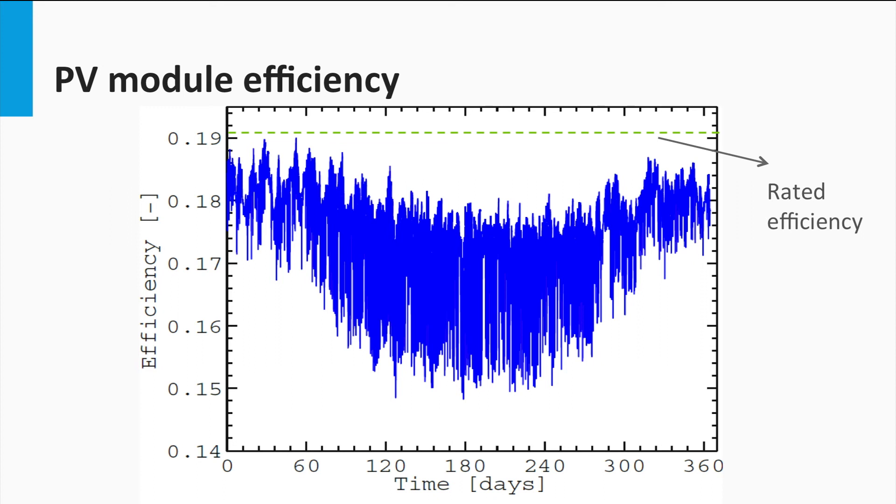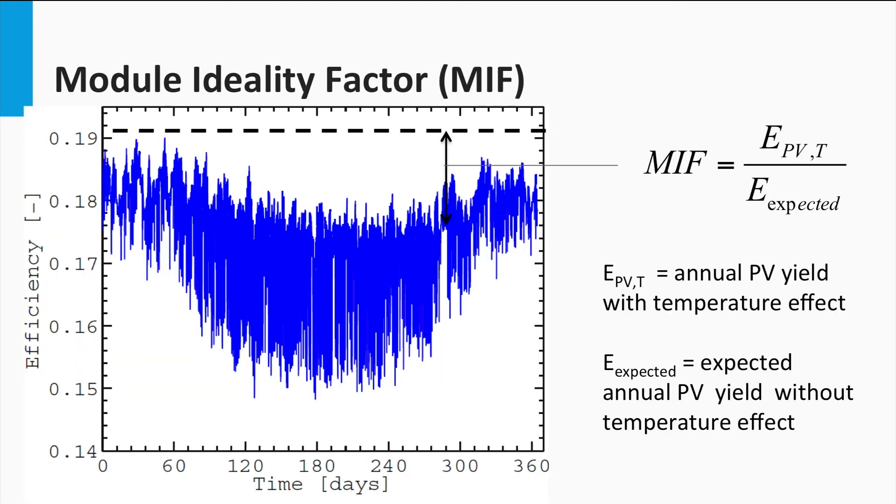To give you an idea of the deviation from the expected efficiency, the rated efficiency is shown for this model. So you see, temperature effect cannot be underestimated as it can turn out to be the biggest reason for a low PV yield. The PV module considered here was a commercial polycrystalline module and the module's parameters were taken from the manufacturer's datasheet. The difference between the expected PV yield with rated efficiency and the actual yield due to the temperature effect gives rise to a module ideality factor.